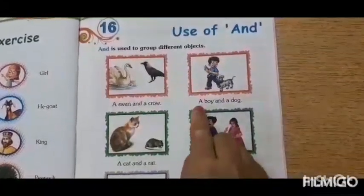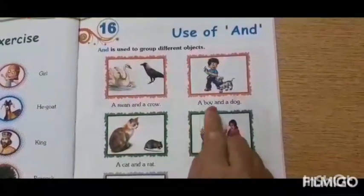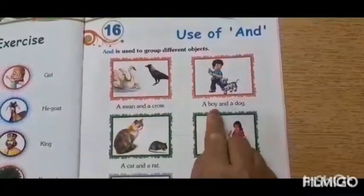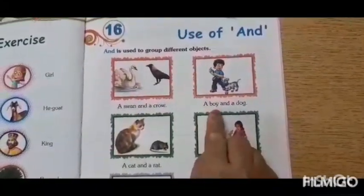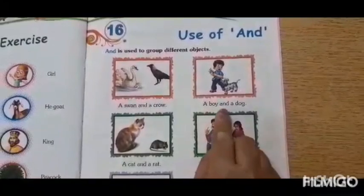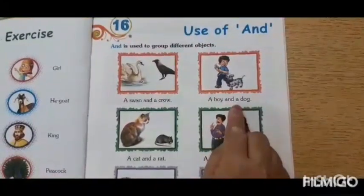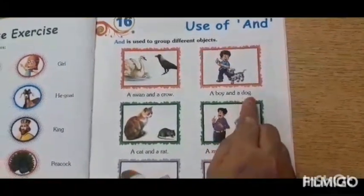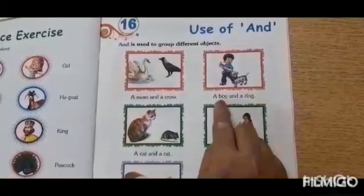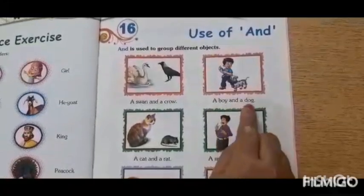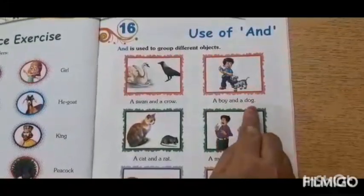A-B-O-Y — boy. A-N-D — and. A-D-O-G — dog. A boy and a dog.